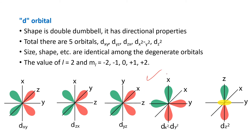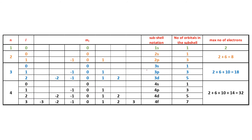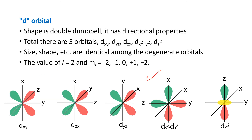For the d orbital, the magnetic quantum number ml has values: minus two, minus one, zero, plus one, and plus two — a total of five values. The angular momentum quantum number l is equal to 2, as shown in the chart on this slide.